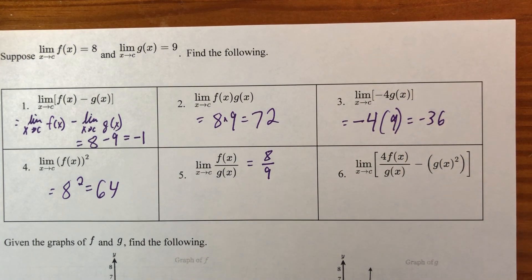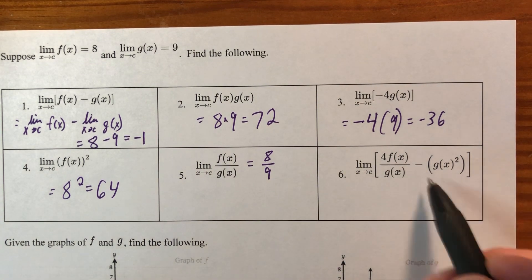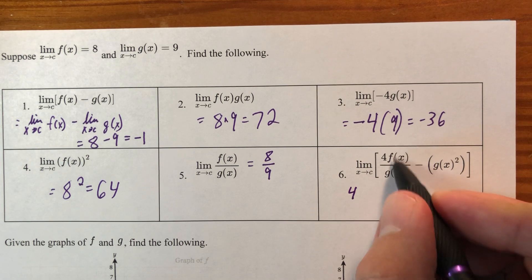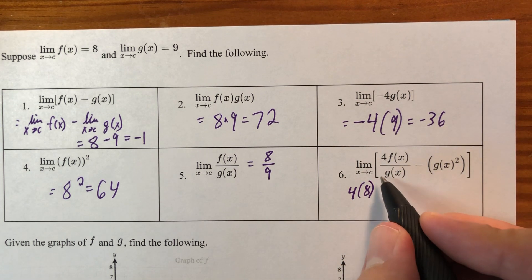Okay, so instead of going through all that and writing all that, this takes all these different aspects and puts them into one problem. So, I have 4 of what I get when I approach c for the f function divided by what I get when I approach c for the g function minus what I get when I approach c for the g function, but I square it.